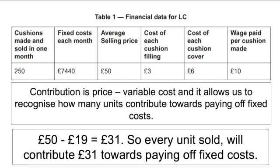We've got £50 as our selling price, and we minus our variable cost per unit which is £19. Remember, £10, £6, and £3 added together equals £19. So that means every unit sold is going to contribute £31 towards paying off fixed costs.